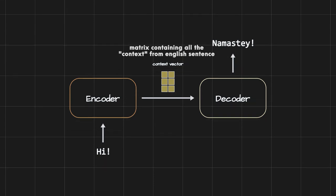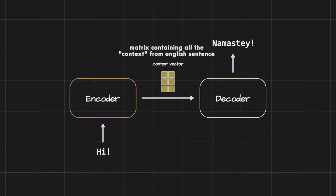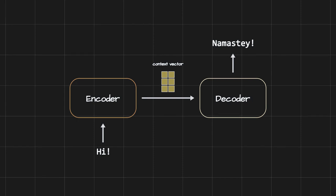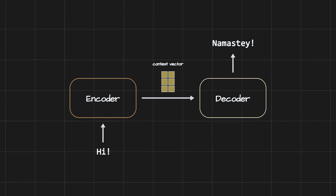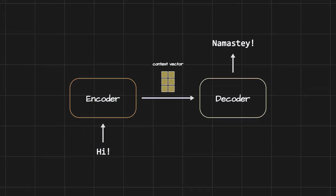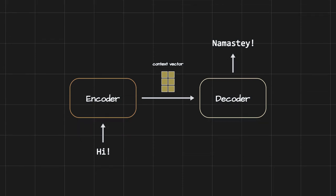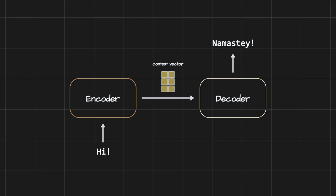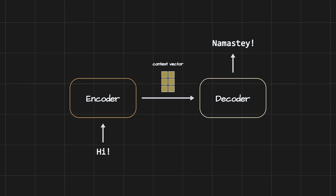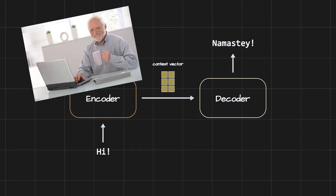The context vector is a matrix containing all the context from the English sentence. As a result, the quality of the translation is determined by the quality of the context vector. This is why we aim to create better context vectors — and this is also where the problem starts.